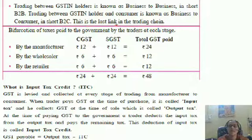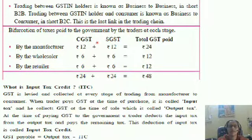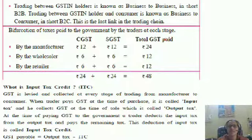This is the last link in the trading chain. Now observe the bifurcation of the taxes paid to the government and traders of each state. We have seen how GST and CGST is paid — this is the total GST paid and its bifurcation.